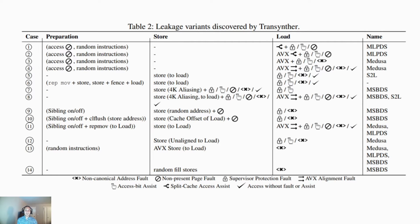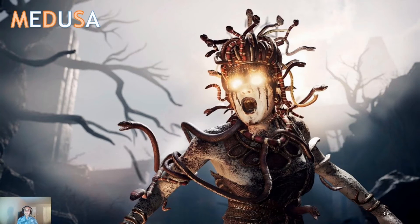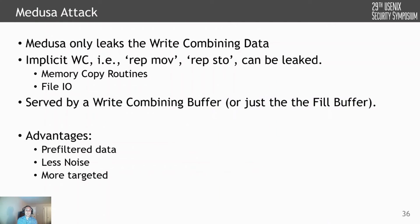We know that some assumptions about these attacks in previous papers are not necessarily valid. For example, we previously assumed that leakage from the store buffer required 4K aliasing, but Transinter generated POCs that leak data from the store buffer without 4K aliasing. With this analysis, we also found a new sub-variant of these attacks, which we called Medusa. Medusa only leaks data from write-combining operations, and there are some operations on Intel CPUs that inherently perform write-combining. The advantage of Medusa compared to previous attacks is that since it only leaks from a specific operation, it has less noise. For example, if you run a whole application on a hyperthread, you won't leak all memory operations you don't care about — you only leak memory copy operations. So you may be able to do a more targeted attack with Medusa.